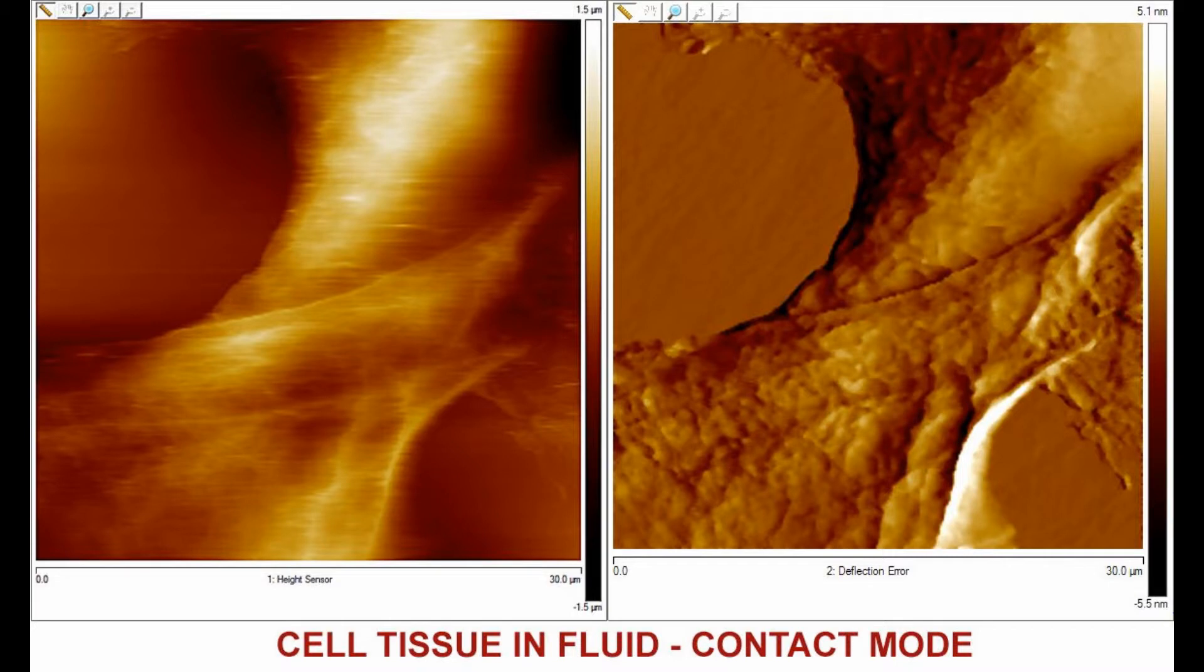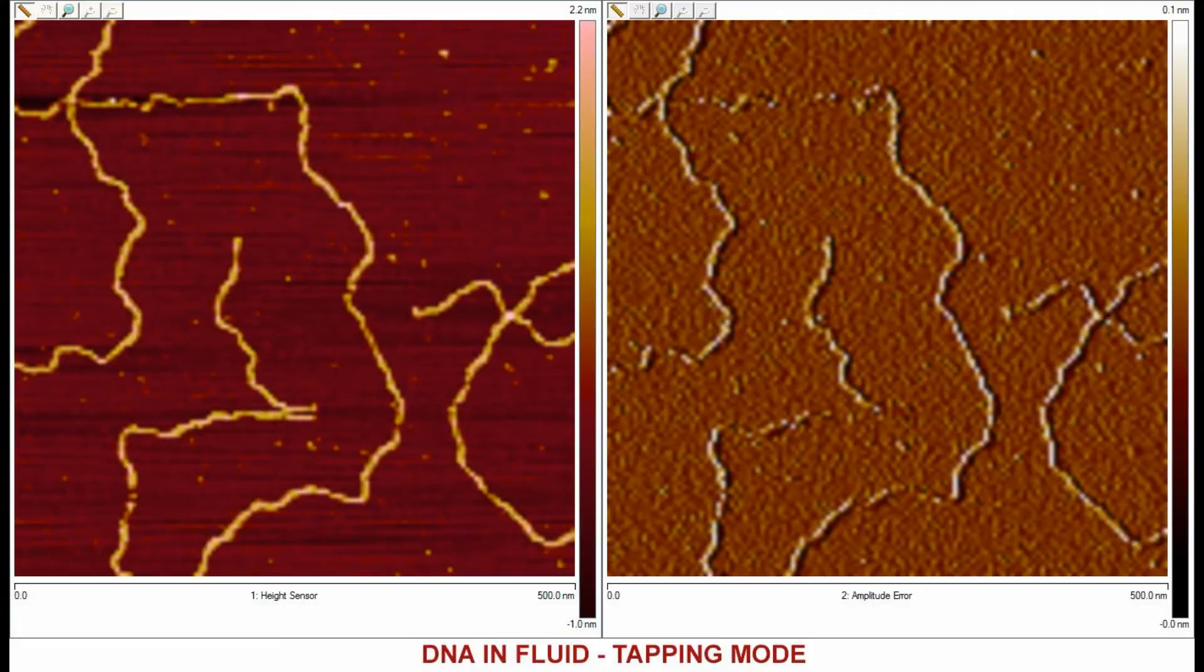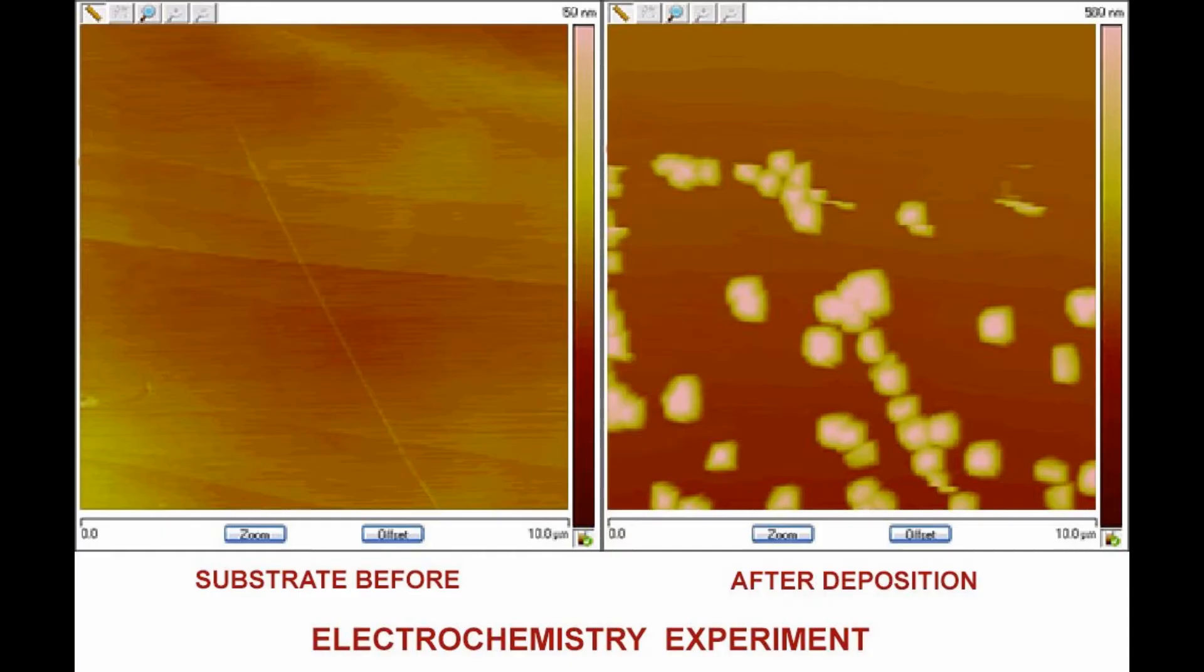AFM scanning in fluid allows researchers to image biological samples in their natural environment. The structure of cell walls or DNA strands can be scanned in fluid solutions that duplicate the chemical surroundings of biological materials found in nature.